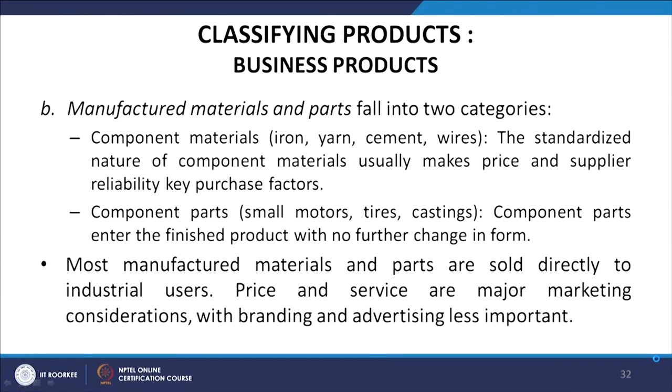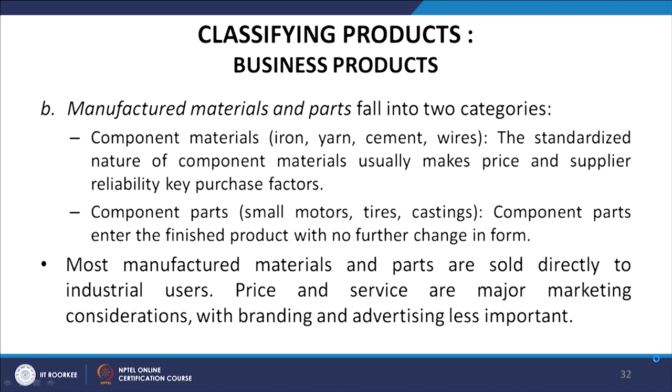The second type of manufactured parts is component parts, such as small motors, tires, and castings. Component parts enter the finished product with no further change in form. Most manufactured materials and parts are sold directly to industrial users, where price and service are the major marketing considerations, while branding and advertising are less important.